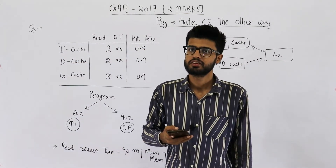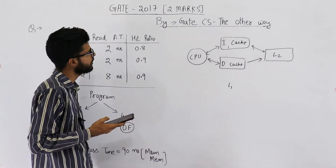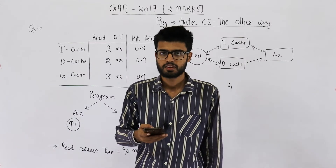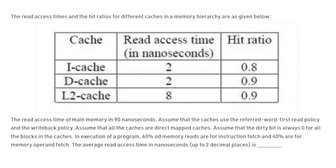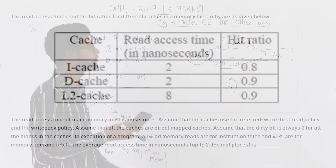Hi students, I'm back with another question from the GATE 2017 exam, Set 2. It's a 2-mark question. Let me first read out the entire question: the read access time and the hit ratios for different caches in a memory hierarchy are as given in the table. The read access time of main memory is 90 nanoseconds. The average read access time in nanoseconds up to two decimal places is what we need to find.